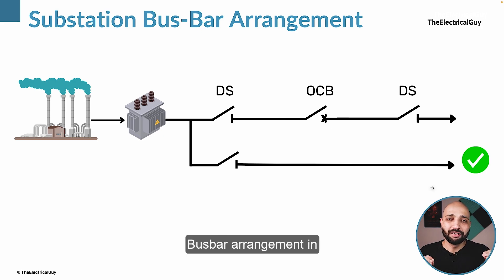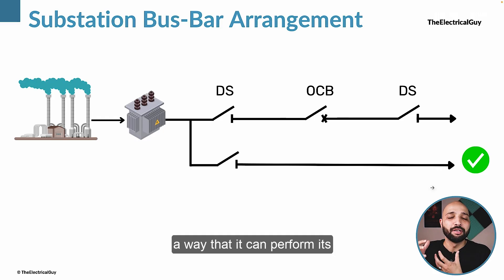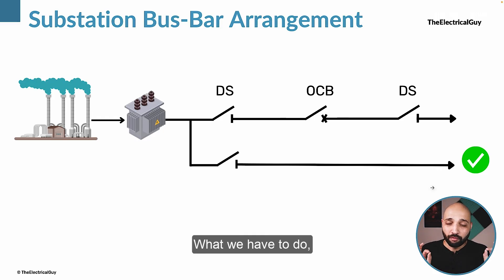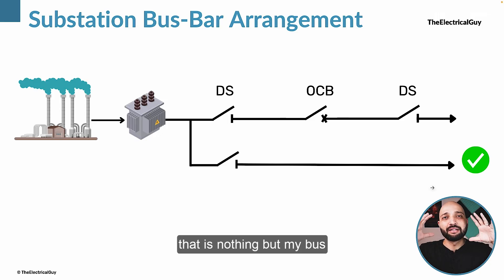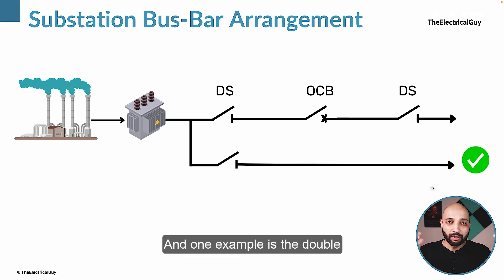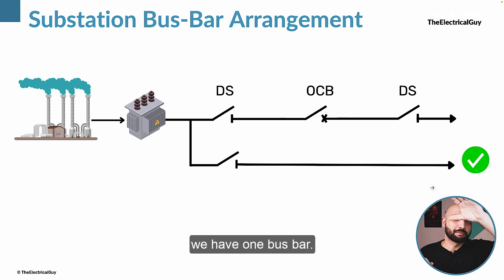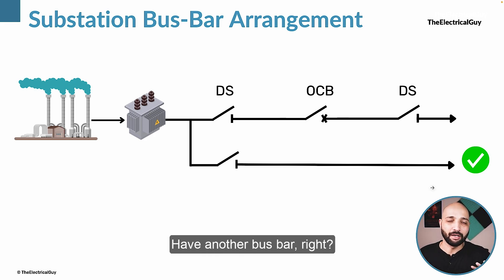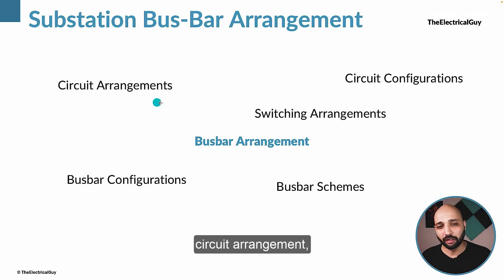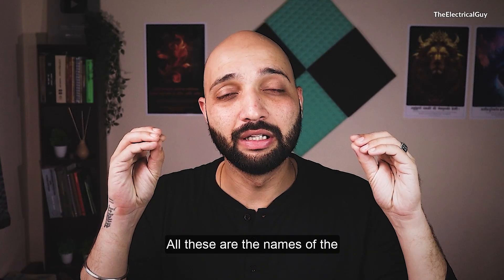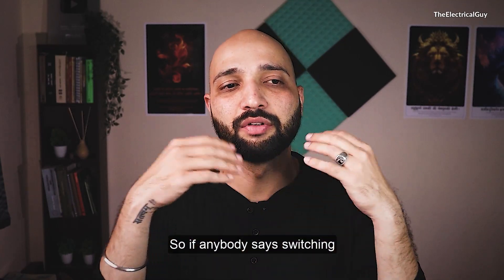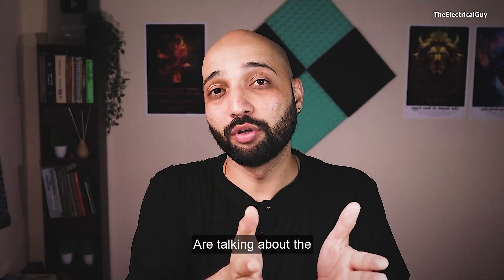In simple terms, busbar arrangement is nothing but the arrangement of substation equipment in such a way that it can perform its basic operations efficiently. If we need to maintain supply continuity, we create an alternate path of supply in case the main path breaks — that is the busbar arrangement. One example is the double busbar scheme: we have one busbar, and if that fails, as a backup we have another busbar. This is also known by many names — circuit arrangement, switching arrangement, circuit configuration, busbar configuration, or busbar scheme — all referring to the same thing.